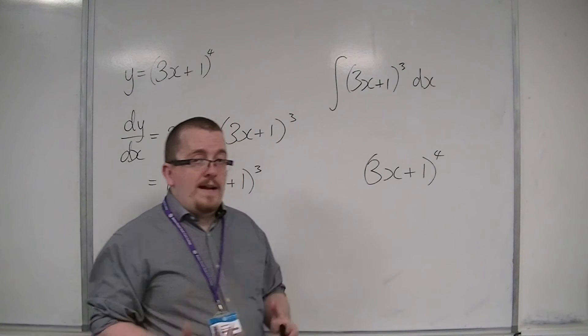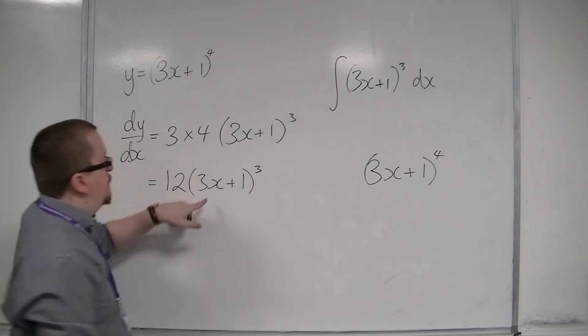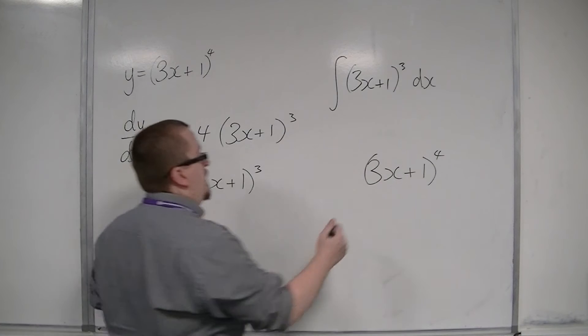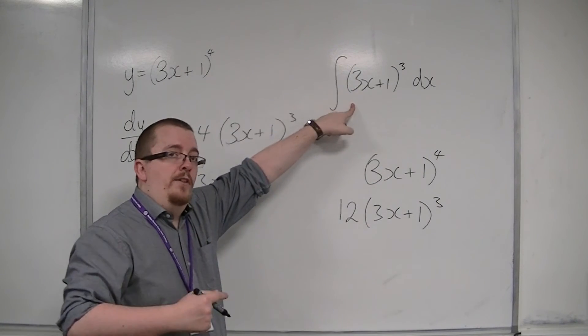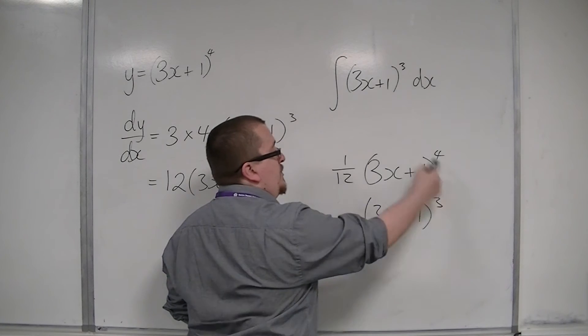So if I work backwards, if I look at 3x plus 1 to the 4 and then differentiate it, which I've just done there, then I get 12 lots of 3x plus 1 cubed. But I don't want 12 lots of 3x plus 1 cubed, I only want 1 lot of 3x plus 1 cubed. So that would mean that if I divide by 12, then this will differentiate to this, and hence this will integrate to this.